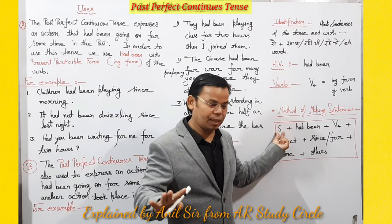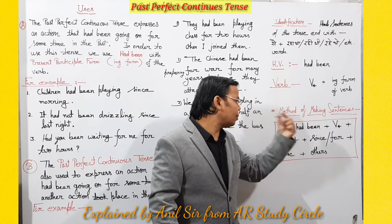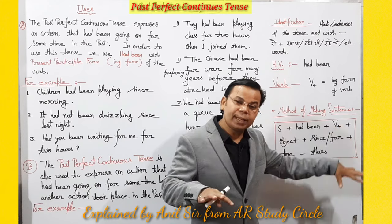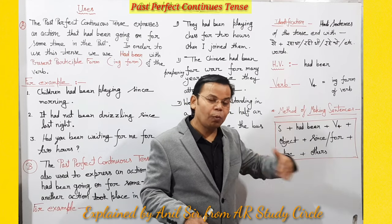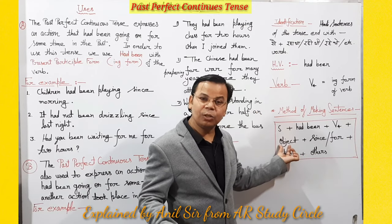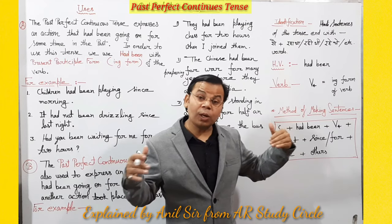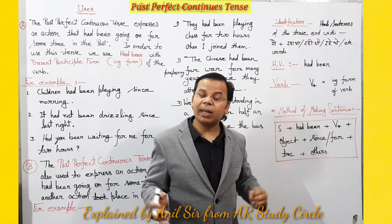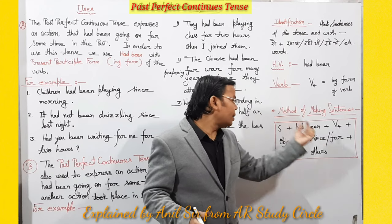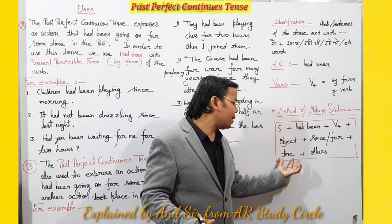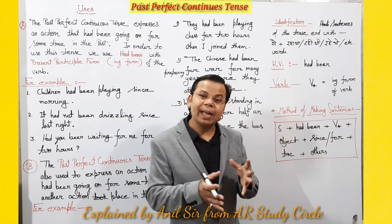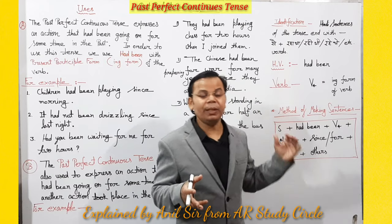Affirmative sentences ke liye: Subject + had been + verb (ing form) + object + time expression. Jiasse 'playing' ho gaya, 'going' ho gaya, 'working' ho gaya — is tarah fourth form (ing form) use hoti hai. Uske baad agar object hai to object, phir time expression mein 'since' ya 'for' aayega, jaise 'since morning' ya 'for two hours'.